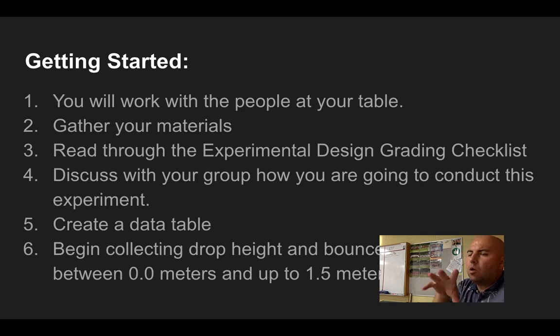Here's how I want you to get started. I want you to work with the people that are at your table. That's your group. Get your materials. We already talked about that. Make sure to read through the experimental design grading checklist that I just showed you. It's in Schoology. Make sure you know what it is you need to have on this. Talk it over with your group. Decide how you're going to conduct this experiment. Create your data table and start collecting drop height and bounce height data that's between zero meters and 1.5 meters. Does anyone have any questions? So eventually you're going to need to put it on a whiteboard. I would say because the whiteboards tend to disappear, I'd put it on a piece of paper or in somewhere in your iPad before you make your whiteboard. Excellent question. Any other questions? We have a little bit of time left in class. Get going.